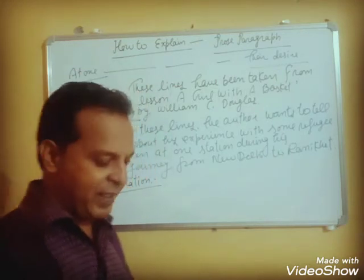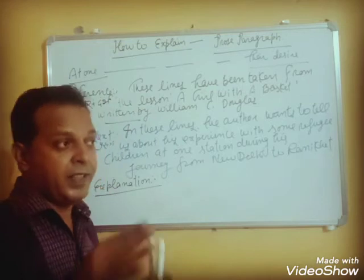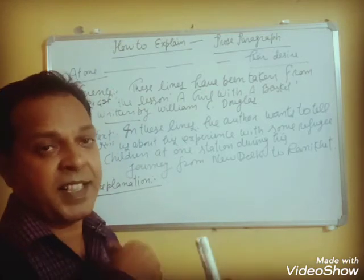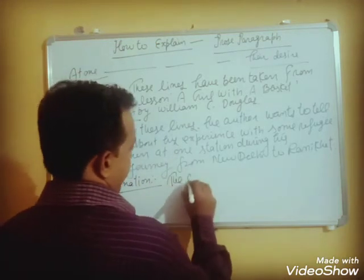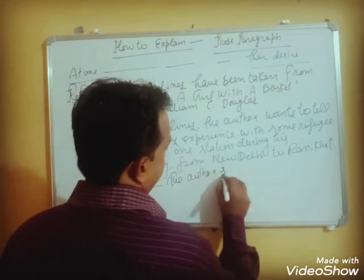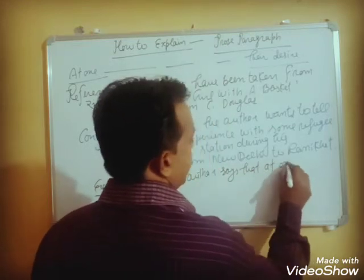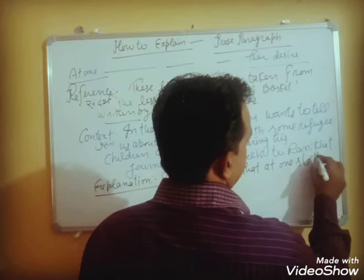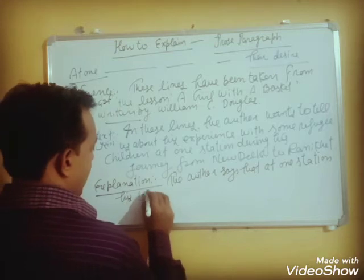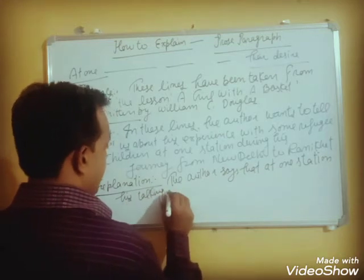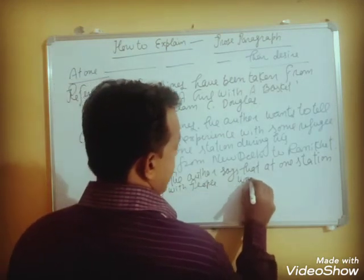Now let us explain. The writer says: 'At one station, my routine of talking with the people was interrupted.' So we write: 'The author says that at one station, his talking with the people was stopped.'